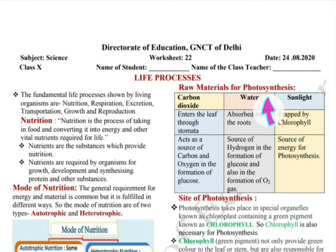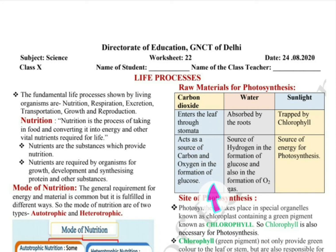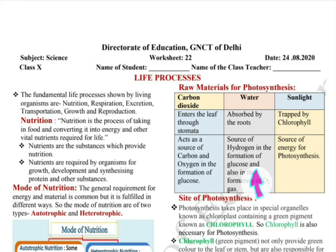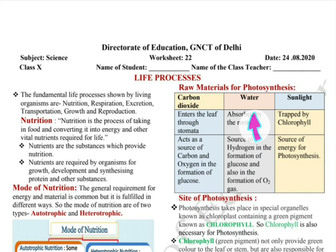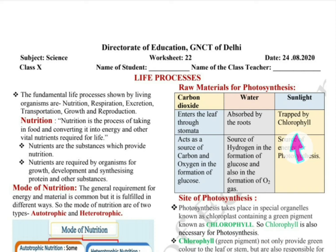The three raw materials for photosynthesis are carbon dioxide, water and sunlight. Carbon dioxide enters the leaf through stomata and acts as the source of carbon and oxygen in the formation of glucose. Water is absorbed by roots and is the source of hydrogen in the formation of glucose and also in the formation of oxygen gas. Sunlight is trapped by chlorophyll — chlorophyll's main work is to use sun energy and convert it to chemical energy — acting as the source of energy for photosynthesis.